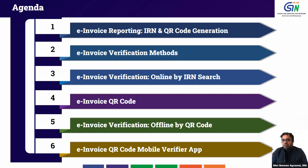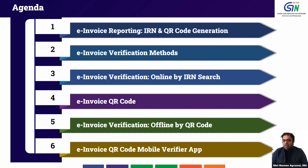The agenda for this webinar is that we have expanded the e-invoice ecosystem. A taxpayer who is eligible for e-invoice reporting can report an e-invoice across six IRP portals. We will cover how e-invoice reporting is done, the methods for verification including the online method, how the e-invoice QR code works, and how you can verify it through an e-invoice verification mobile app.